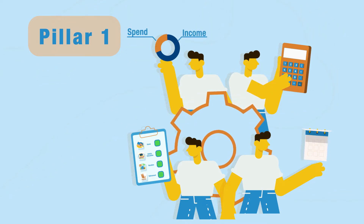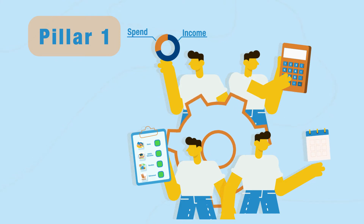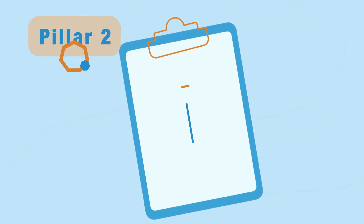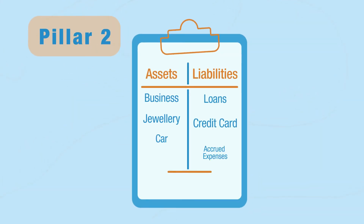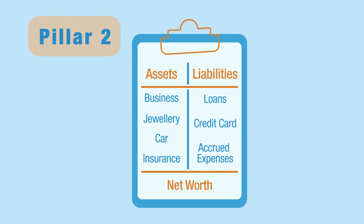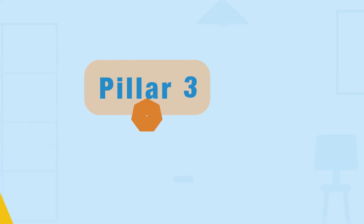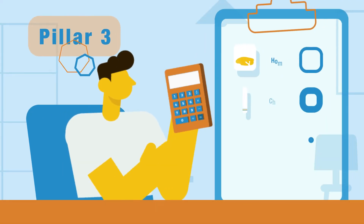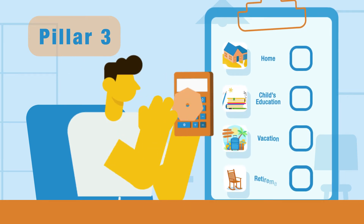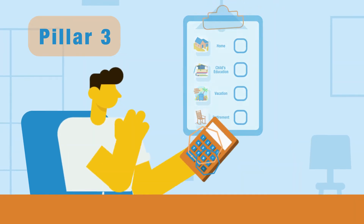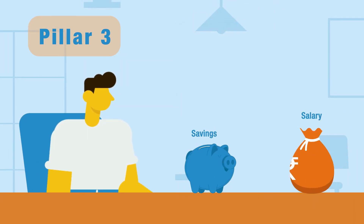Pillar two: know your financial status or current net worth to understand how far you are from your goal. Pillar three: with this information in hand, calculate the amount you need to save to reach your goals.